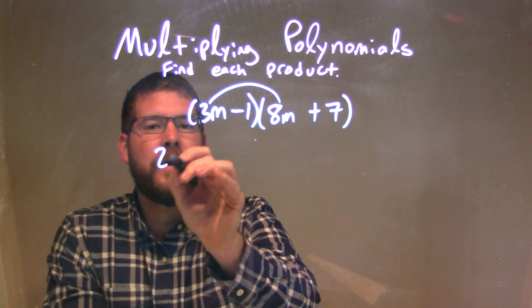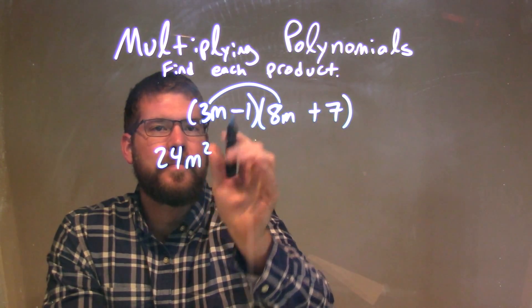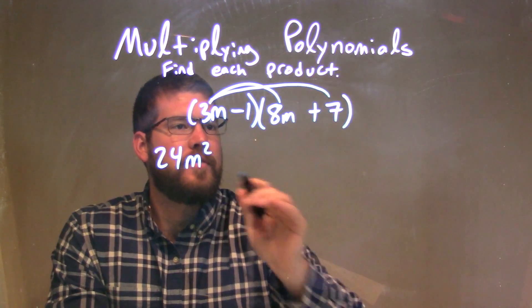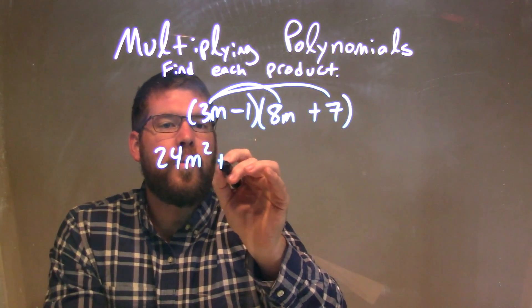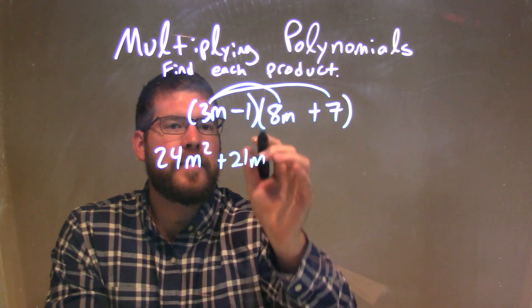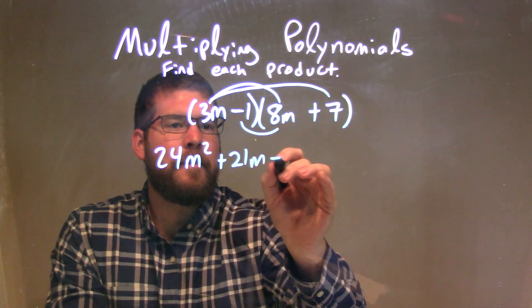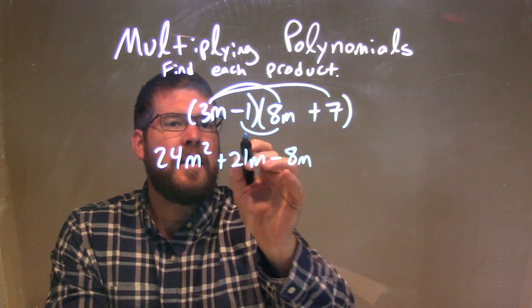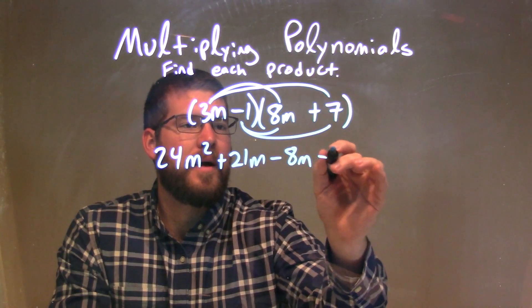3m times 8m is 24m squared. 3m times 7 is 21m. Minus 1 times 8 is minus 8m. Minus 1 times 7 is minus 7.